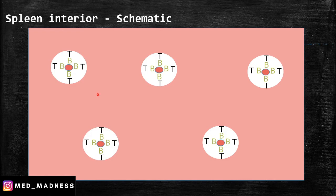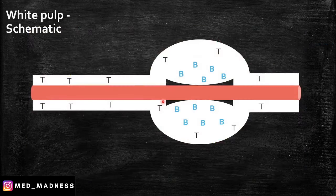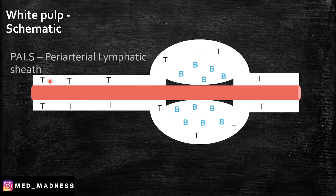So this is the spleen interior. You can appreciate the red areas here, which is the red pulp, and the white ones are the white pulp. Taking the white pulp — you can appreciate the splenic artery and arterioles here. This is surrounded by a sheath of T cells. This is nothing but the peri-arterial lymphatic sheath, or PALS.